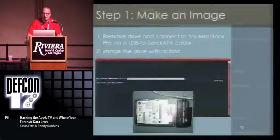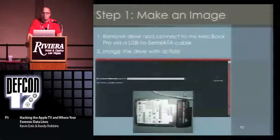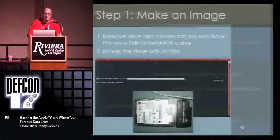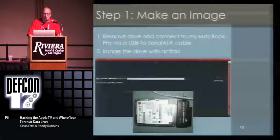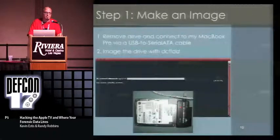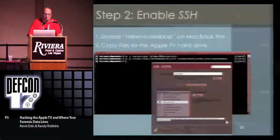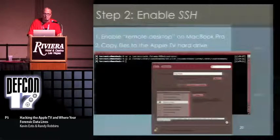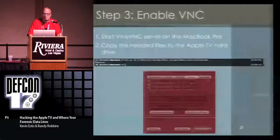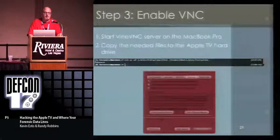On the old way, you had to actually take out the drive, connect it. Generally you'd want to image the drive in case you hosed it. In this case I used DCFLDD just so that I could hash it and make sure I didn't have any bit-for-bit errors. Then you had to actually copy over some of the binaries for SSH, which was time-consuming. Enabling VNC — same thing. It was not very easy. You had to download VineVNC, install it on your machine, copy over the plist.